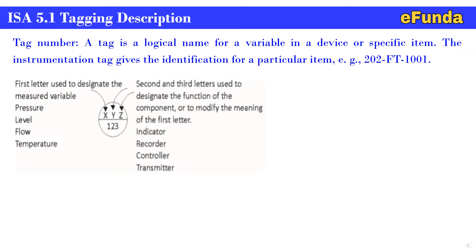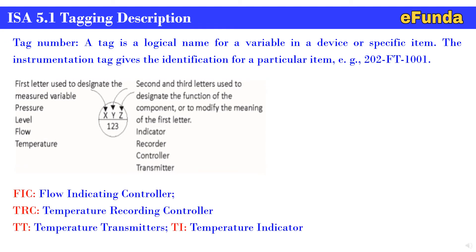Y is the second and third letter used to designate the function of the component or to modify the meaning of the first letter - that is indicator, recorder, controller, transmitter. For example, FIC is flow indicating controller, TRC is temperature recording controller, TT is temperature transmitter, TI is temperature indicator.